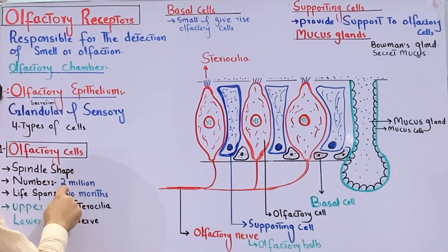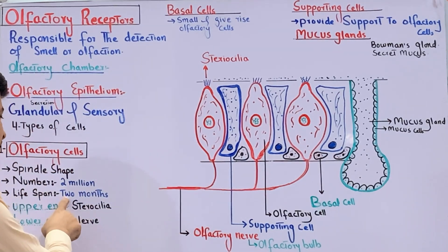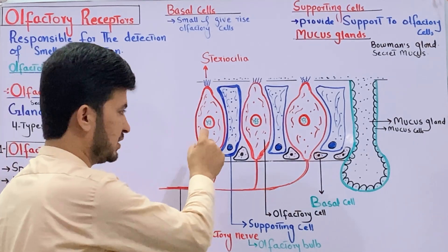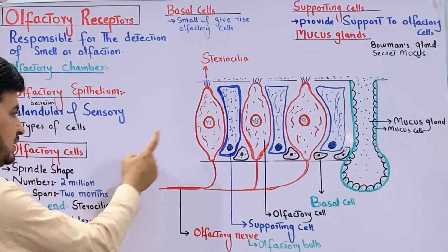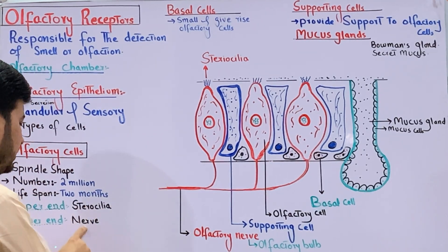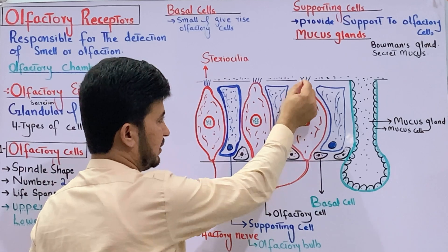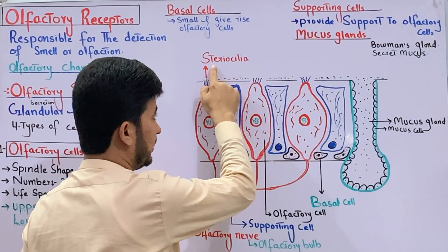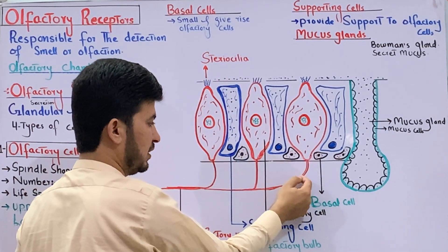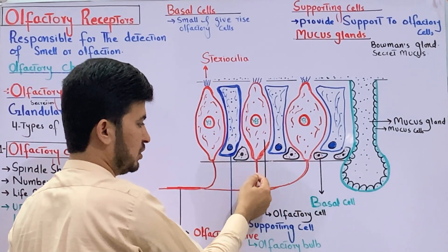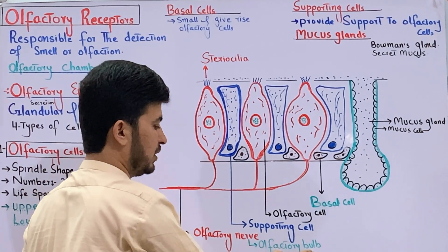The number of olfactory cells in the human is approximately 2 million. Their lifespan is approximately 2 months — after 2 months, old olfactory cells are finished and new olfactory cells are formed. At the upper end, stereocilia are present, and the lower end is narrow. The lower end forms the olfactory nerve, which connects to the human brain.